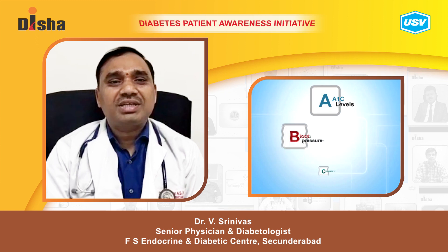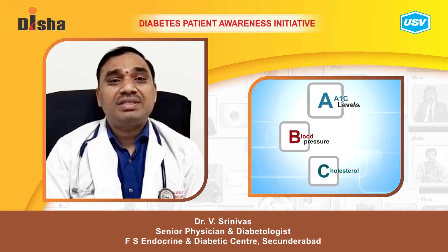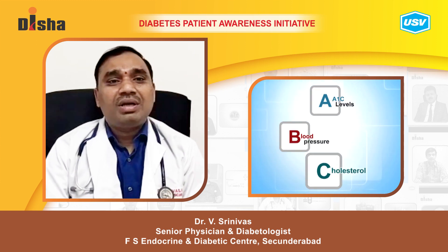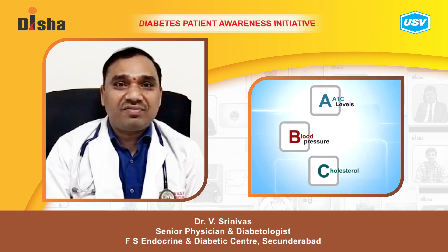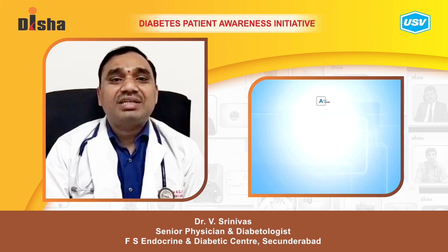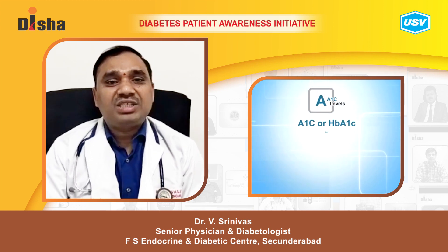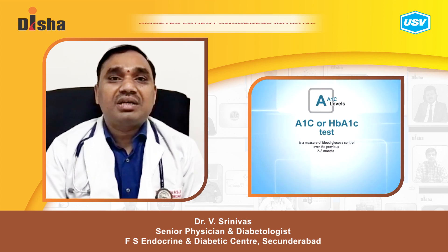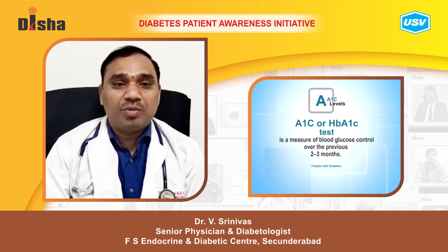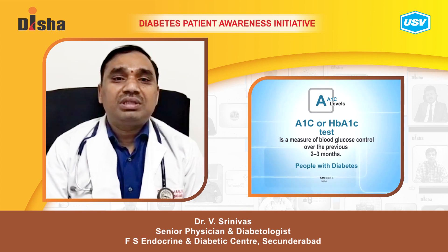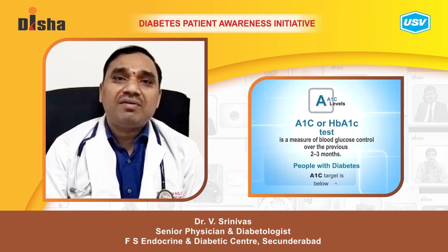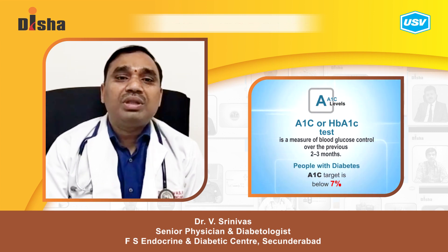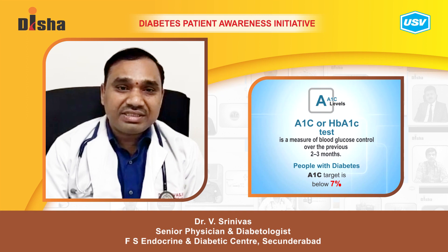Today I am discussing the ABCs of diabetes. What does 'A' stand for? A stands for HbA1c. HbA1c is called glycated hemoglobin, which tells us about the average control of your blood sugar over the last three months.